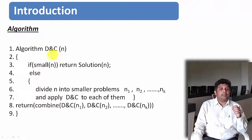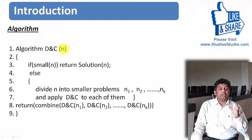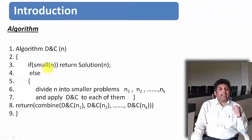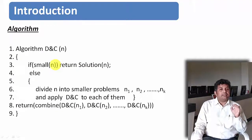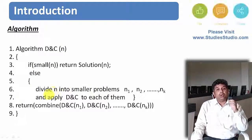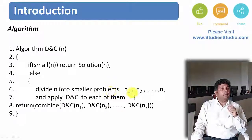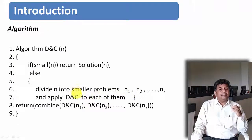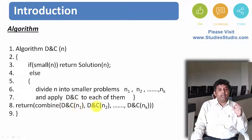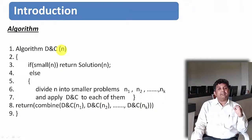If I want to write this in the form of an algorithm: Algorithm divide-and-conquer, where n is the number of elements. If n is small enough, I will apply divide and conquer directly, find the solution, and return it. Otherwise, if n is big enough, I will divide n into smaller sub-problems n1, n2, up to nk. For each ni I will apply divide and conquer recursively, and then combine the results. If n1 is still big, I will subdivide it again, continuing till I find the result.